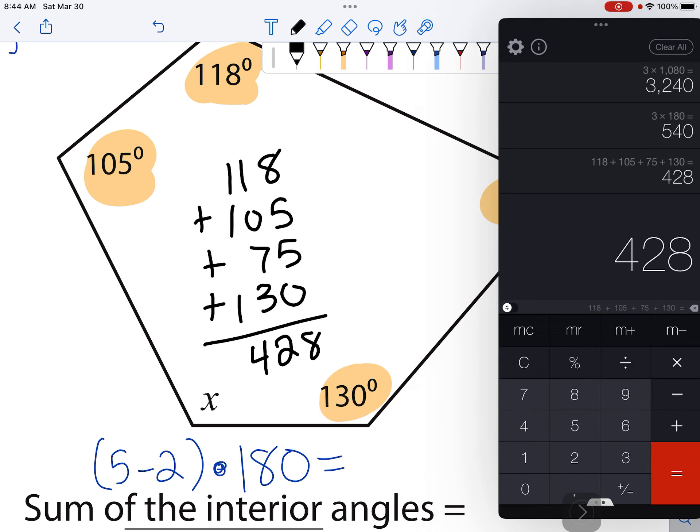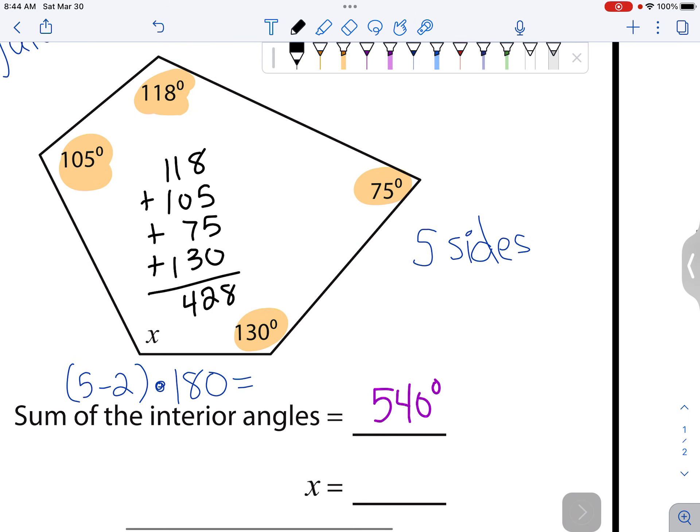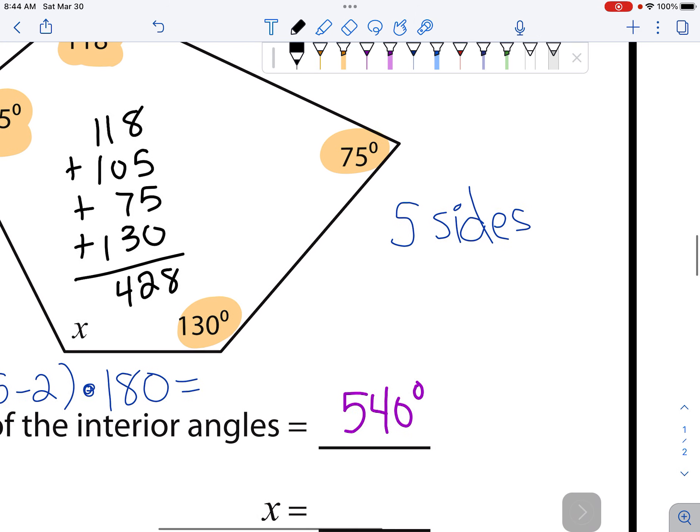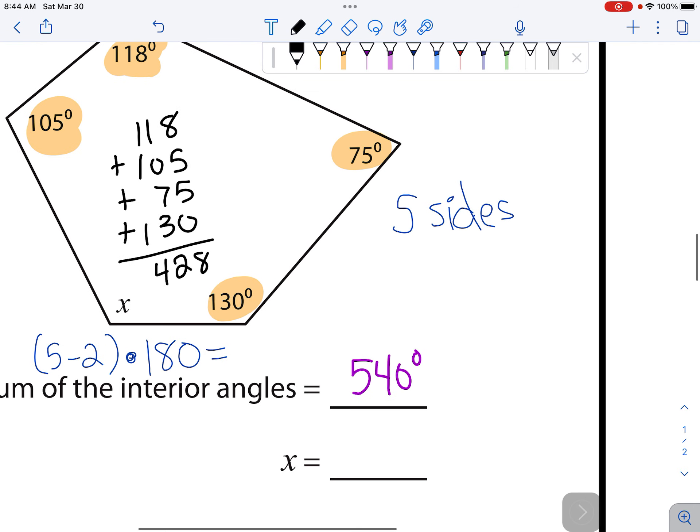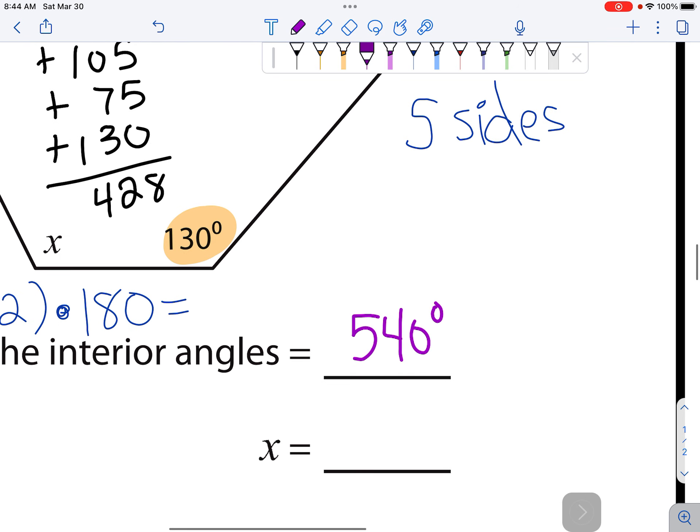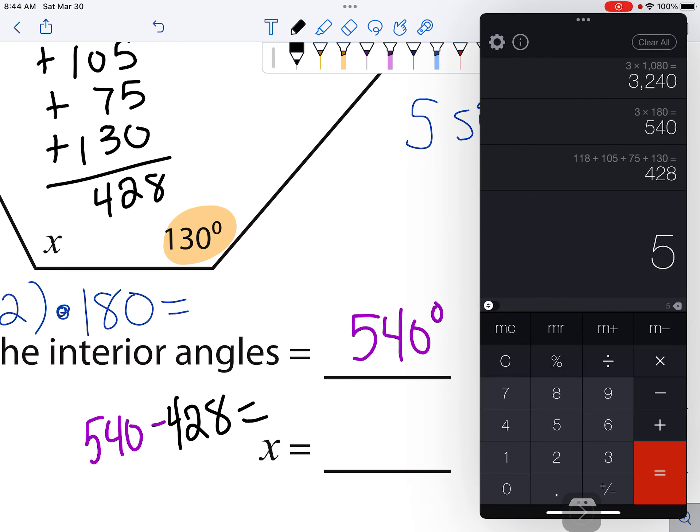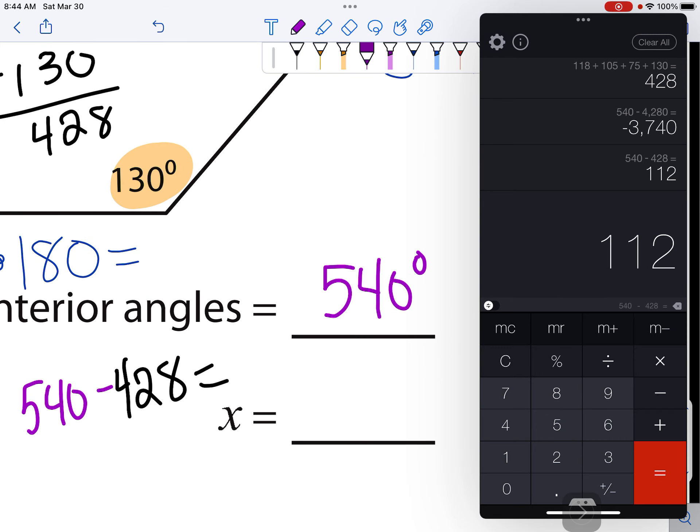But our total was supposed to be 540. So if we're going to find the missing angle, we can say, well, the total is 540, take away the 428 that we already have. 540 minus 428 - that was an extra zero - 540 minus 428 is 112. That means X is 112 degrees.